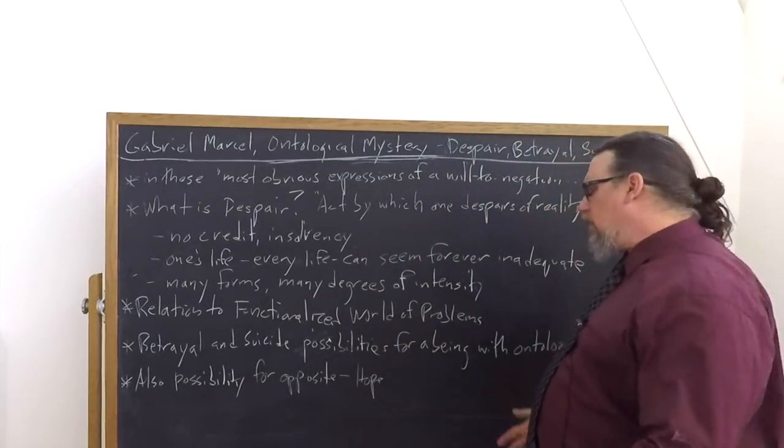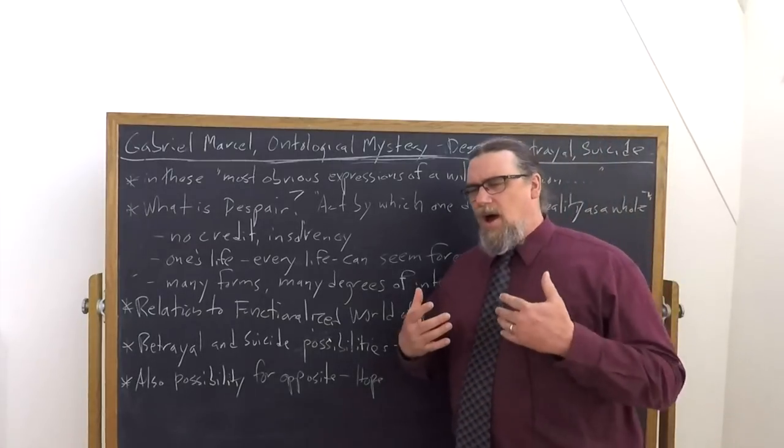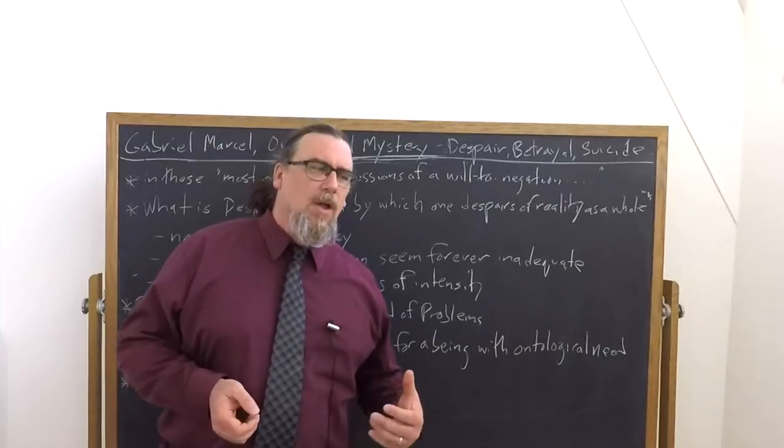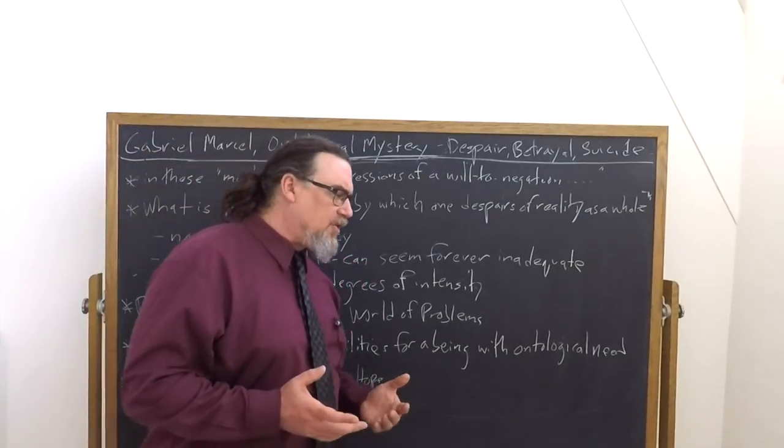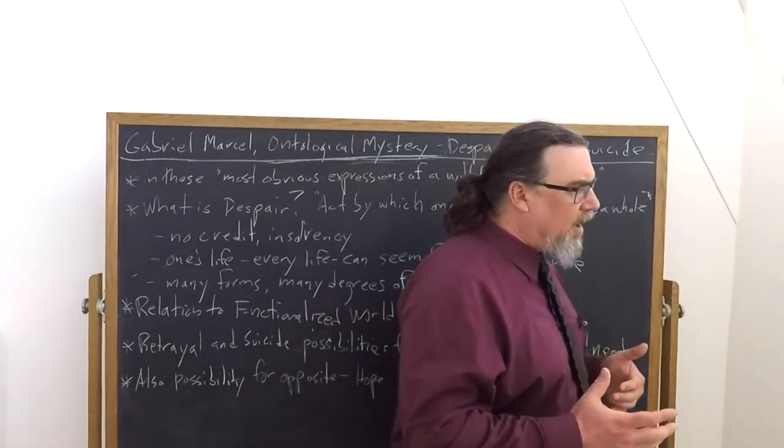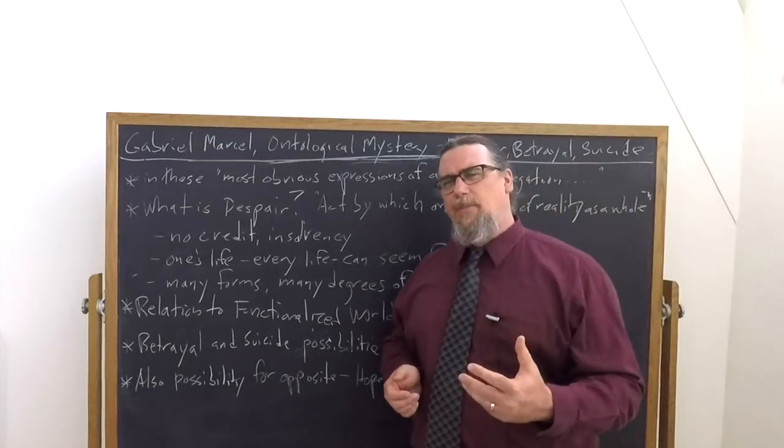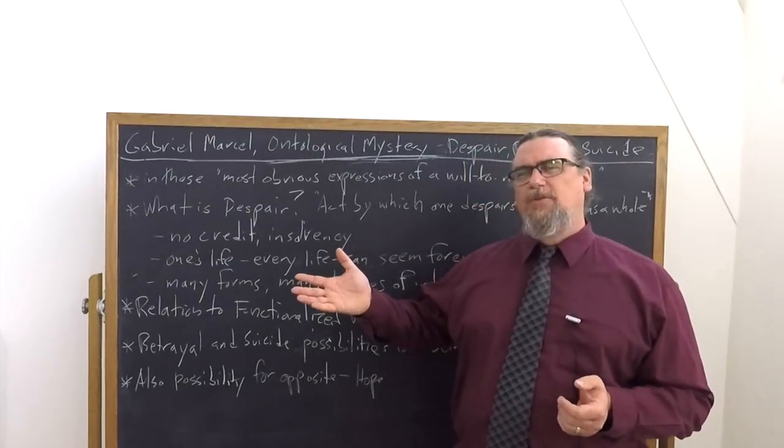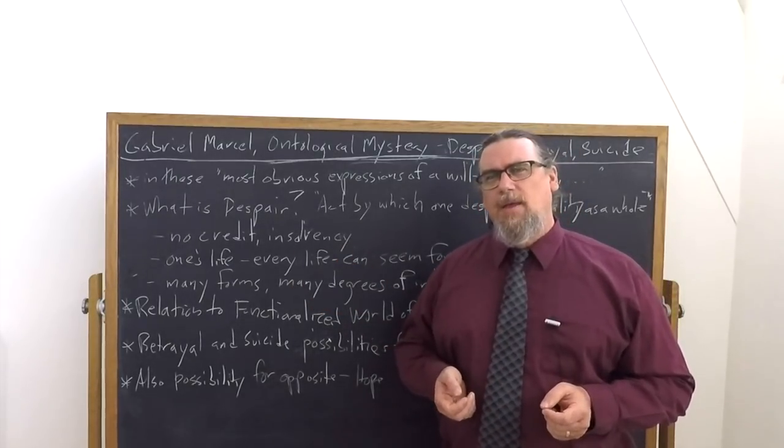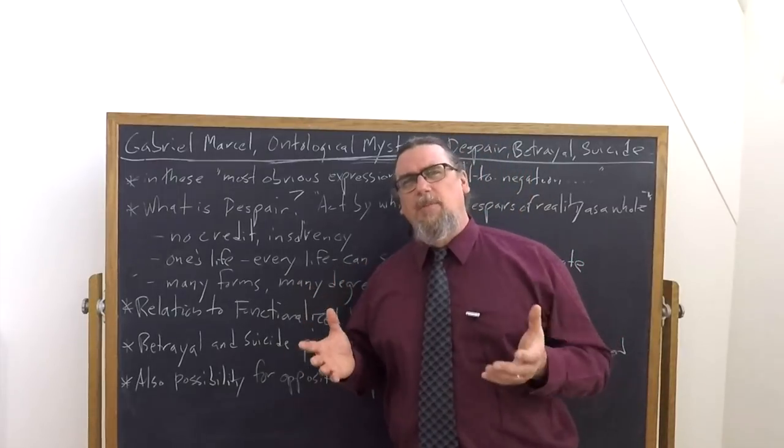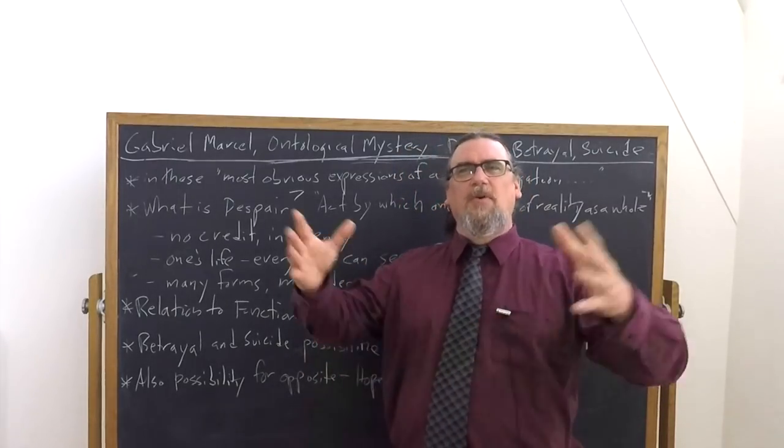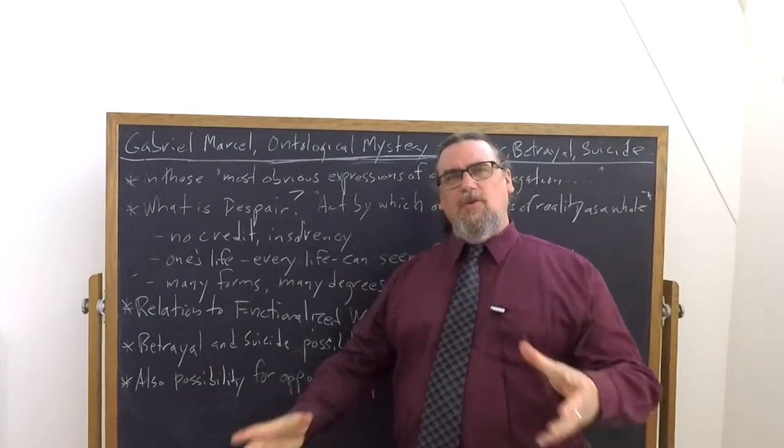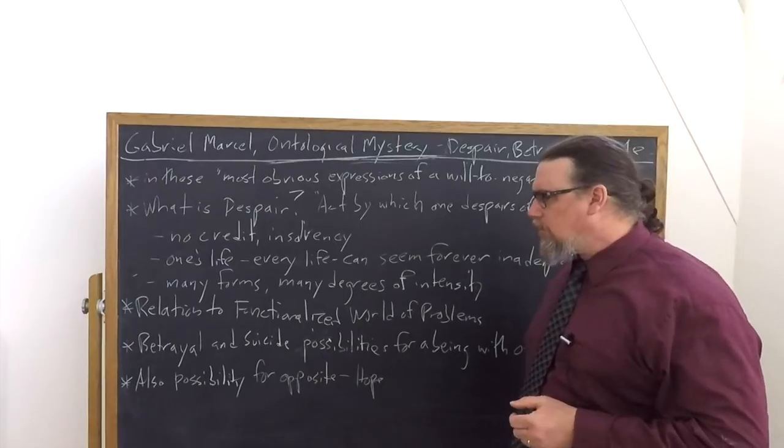Betrayal and suicide, as he says, are constant possibilities for us. What does he mean by betrayal? Betrayal of the ontological exigency or need within us that we find ourselves not always capable of articulating or understanding well, let alone responding to appropriately. And we find ourselves to some degree resourceless in a world that seems full of all sorts of shallow resources. This is closely connected with despair.